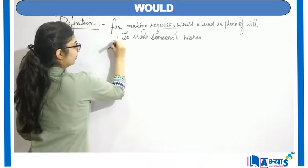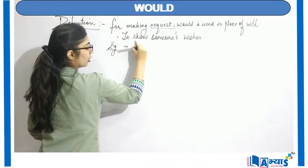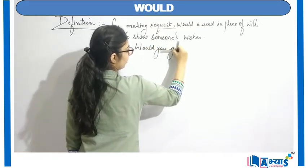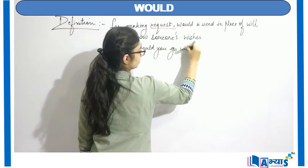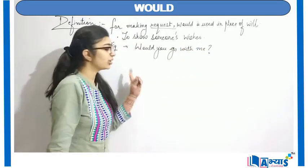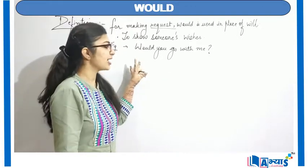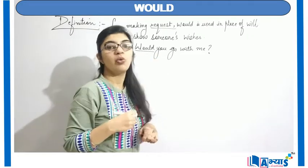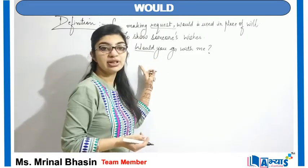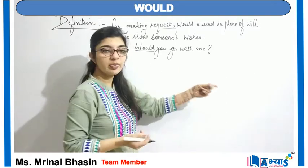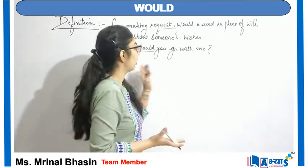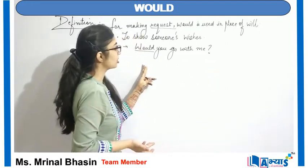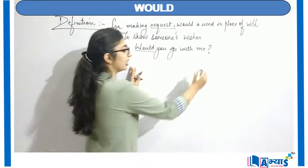For example: 'Would you go with me?' Now this is a request — it is an interrogative request, and that request is in polite form. Why? Because I am making use of 'would' instead of 'will.' Compare 'Will you go with me?' with 'Would you go with me?' — the latter makes a better sense for a request.